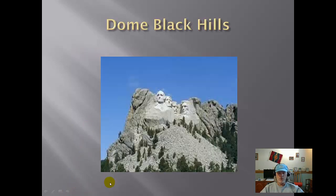A good example of a dome or some up-warping are the Black Hills of South Dakota where Mount Rushmore is. These are mostly granite-type features and these are not normal reverse-faulted mountains. These were from an up-warping and the softer material has eroded away, leaving the Black Hills.